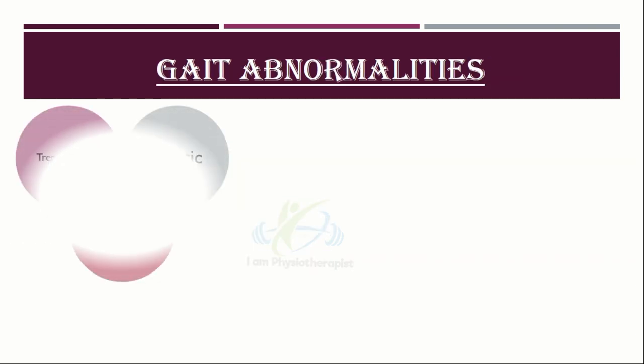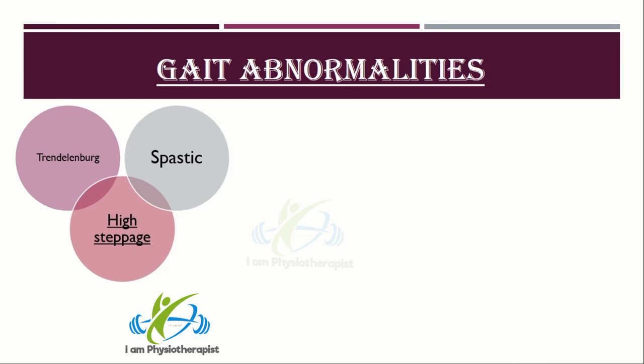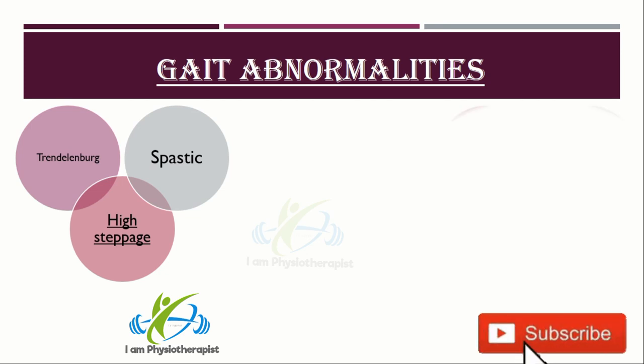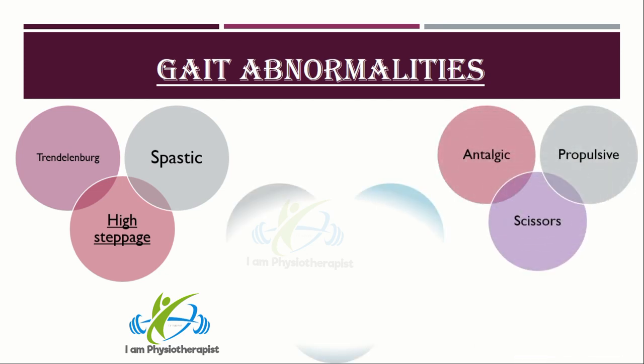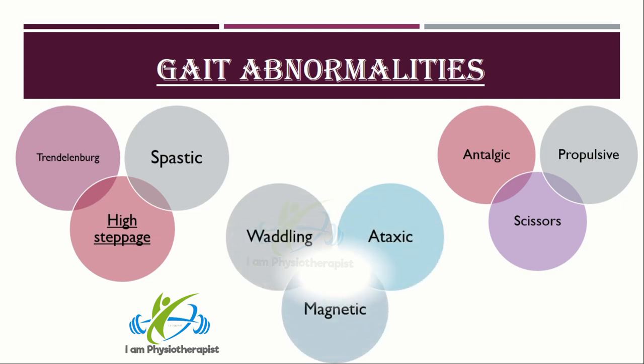Common types of gait abnormalities that may require gait training include Trendelenburg gait, high steppage gait, spastic gait, antalgic gait, propulsive gait, scissors gait, waddling gait, ataxic or broad-based gait, and magnetic gait.